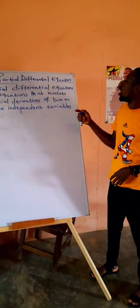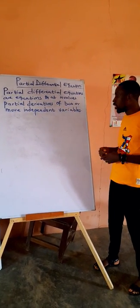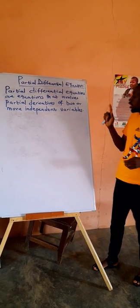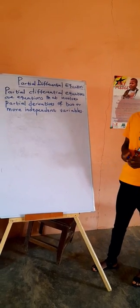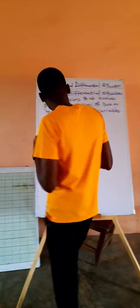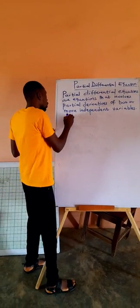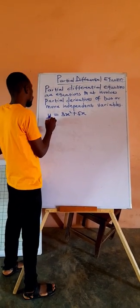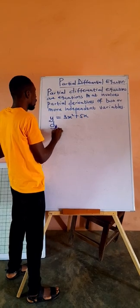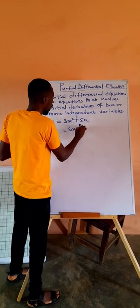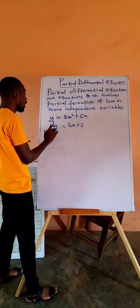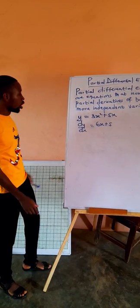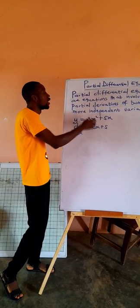Partial differential equations are equations that involve partial derivatives of two or more independent variables. You know how to differentiate when we have an equation like 3x squared plus 5x, and you differentiate this to get dy/dx equal to 6x plus 5. This is an ordinary differential equation because it involves only one independent variable.